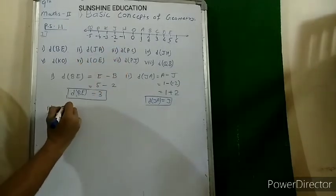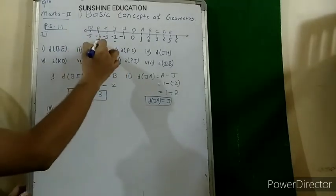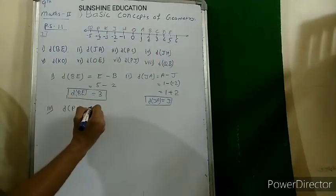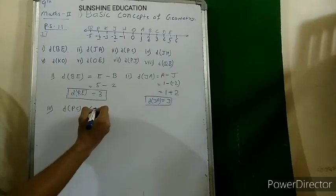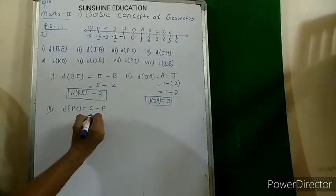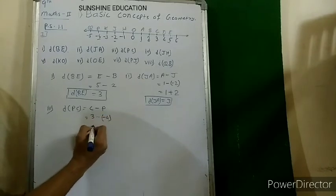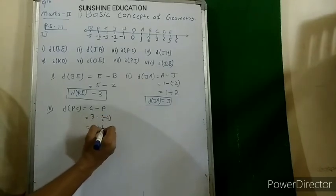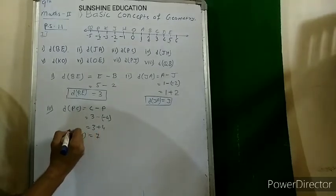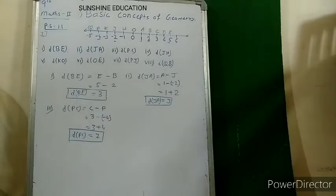Third: distance PC. C is at the right-hand side so C is greater. Distance PC = C minus P. The coordinate of C is 3 and the coordinate of P is minus 4. So 3 minus (minus 4) = 3 plus 4 = 7. Distance PC is 7 units.